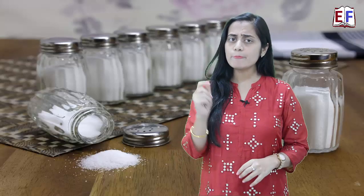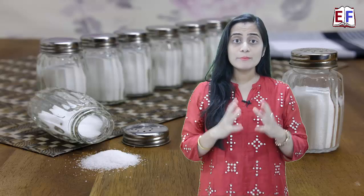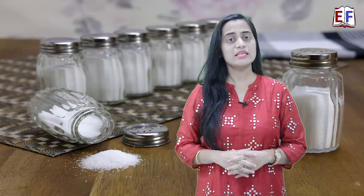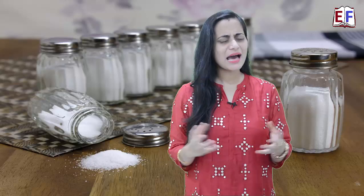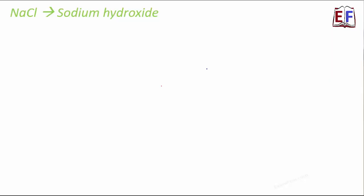Common salt is an important raw material for many materials of daily use, such as washing soda, baking soda, bleaching powder, and many more. We see that there are so many useful products which are obtained from sodium chloride. The first one being sodium hydroxide. How do we produce sodium hydroxide from sodium chloride? By the process of electrolysis. When electricity is passed through aqueous solution of sodium chloride, it decomposes to form NaOH.